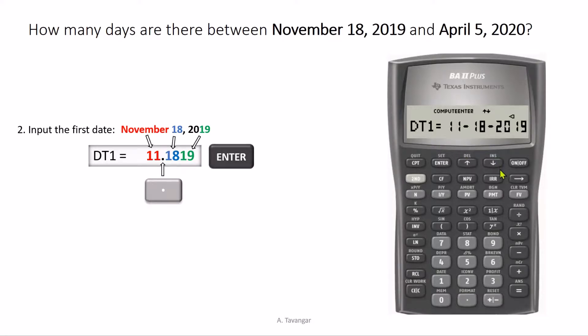Now we use the down arrow here to move to the second date, DT2. Now, same procedure.